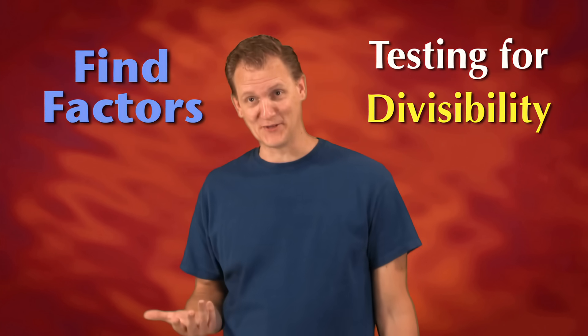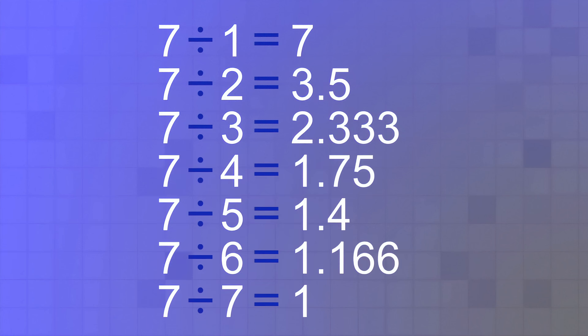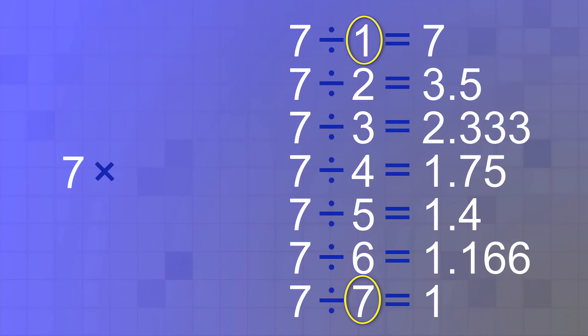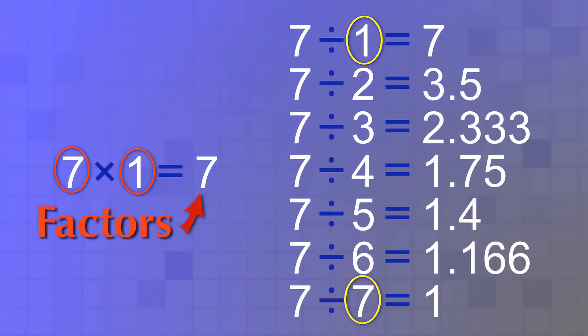I'm going to do this really fast using my calculator. OK, here are the numbers I got. That's interesting — the only two numbers that didn't leave remainders were 1 and 7, and those are kind of obvious. We know that if you multiply any number by 1, you'll just get that same number. But why aren't there any other factors of 7?